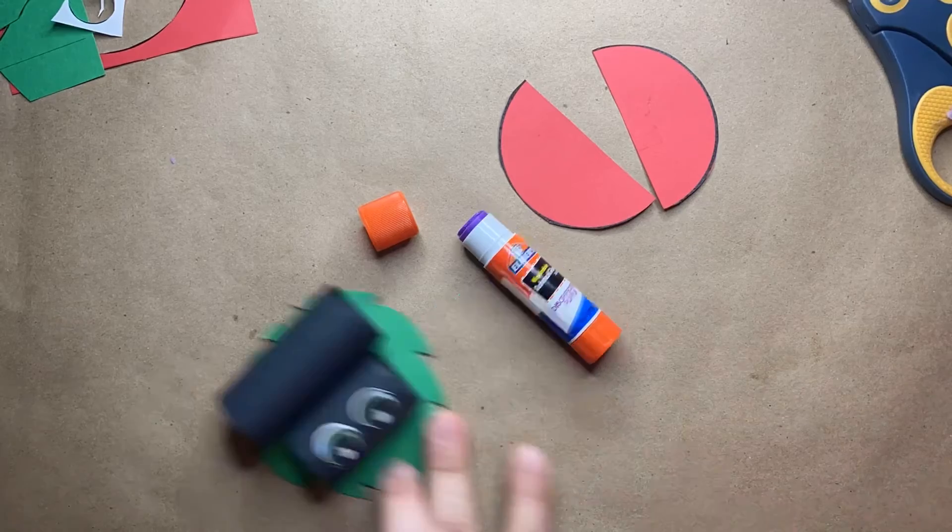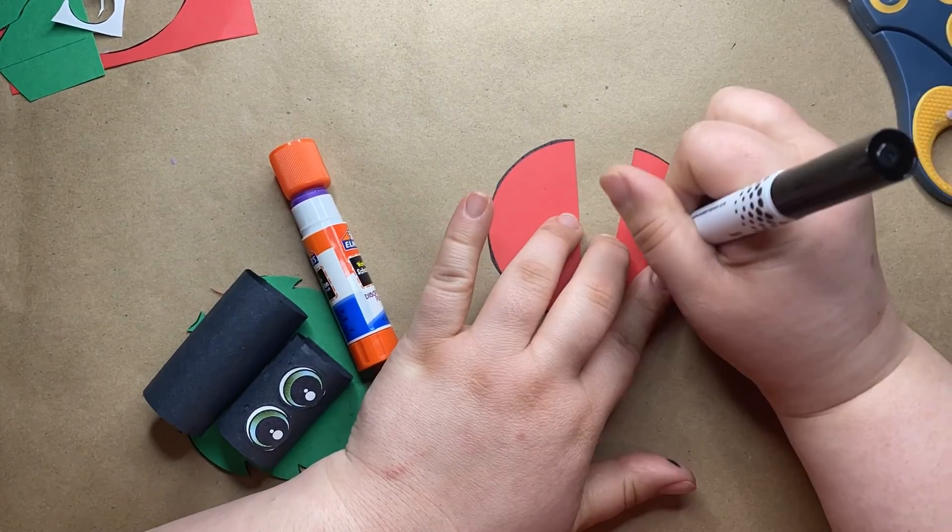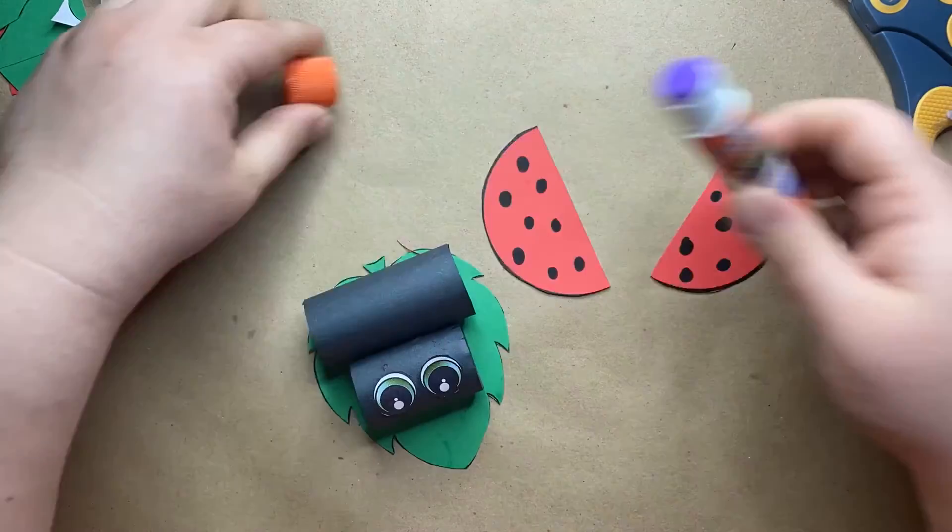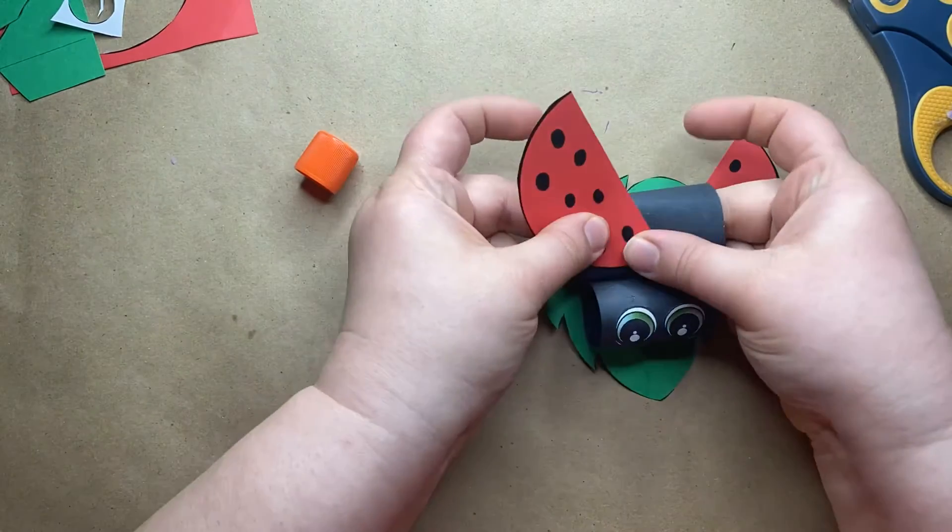Next, cut your circle in half and decorate it any way you like. I decided to do little black dots and then glue them onto the back of your ladybug.